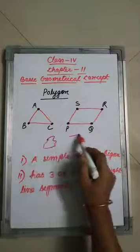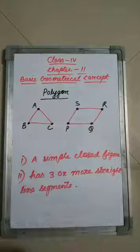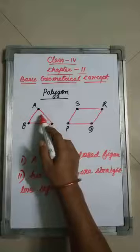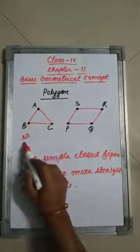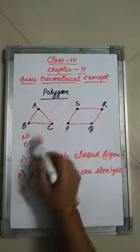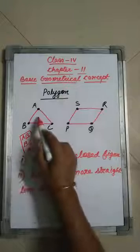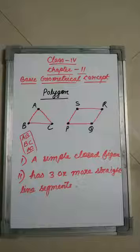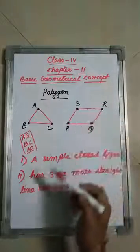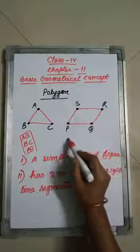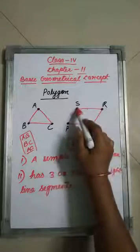We cannot have a polygon with curved or crossing lines — all the line segments should be straight lines. For example, figure ABC is having three sides: AB is one side, BC is another side, and AC is another side. So we have a three-sided polygon — a triangle. In a four-sided polygon PQRS, we have four sides.